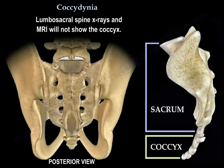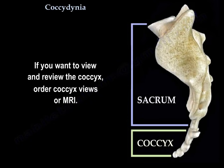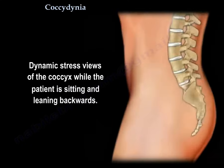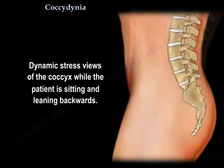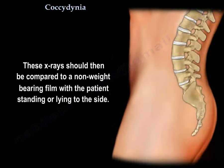Lumbosacral spine x-rays and MRI will not show the coccyx. If you want to view and review the coccyx, order coccyx views or MRI. Dynamic stretch views of the coccyx should be taken while the patient is sitting and leaning backwards, then compared to a non-weight bearing film with the patient standing or lying to the side.